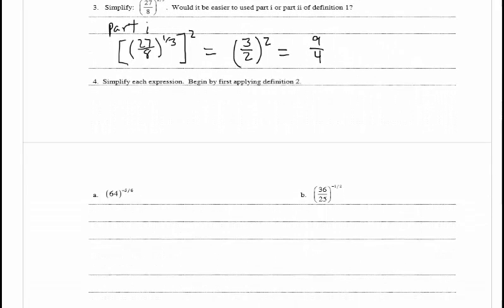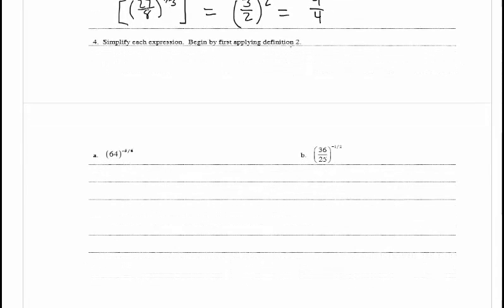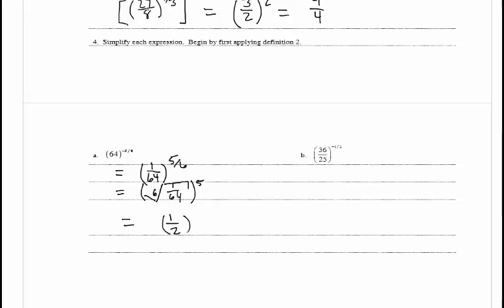In problem 4, simplify each expression by first applying definition 2, which changes negative exponents to positive exponents. For part A, we have 64 to the negative 5 sixths. We rewrite it as 1 over 64 to the 5 sixths. Taking the 6th root first, we get the 6th root of 1 over 64 raised to the 5th power. The 6th root of 1 over 64 is 1 half, so we have 1 half to the 5th power, which equals 1 over 32.